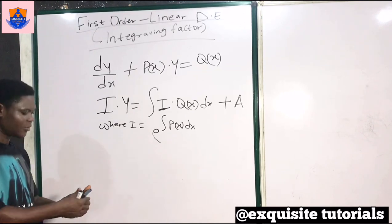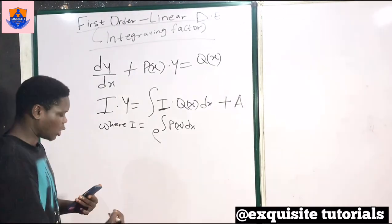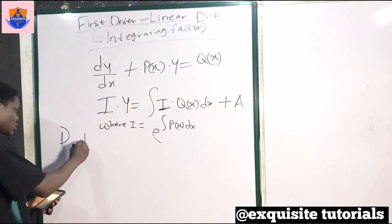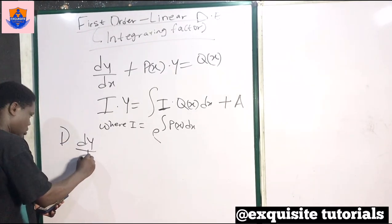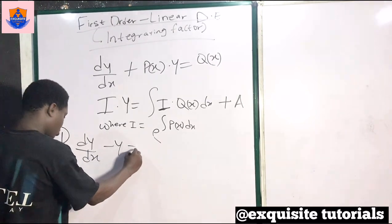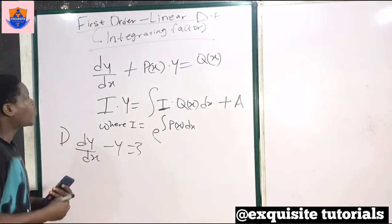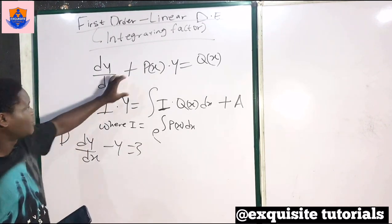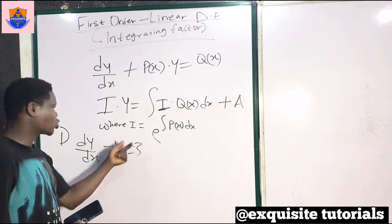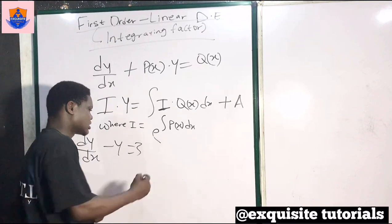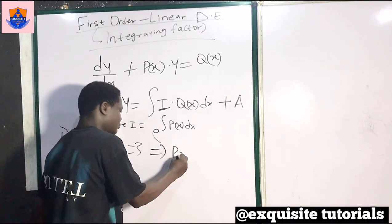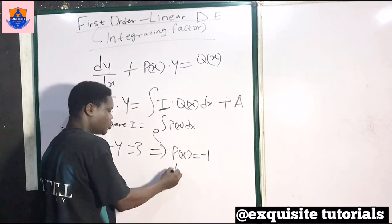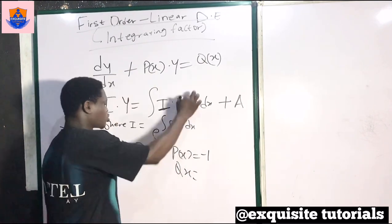Our first question is: dy over dx minus y equals 3. When you compare this equation with our general equation, dy over dx matches dy over dx, and the coefficient of y is minus 1. So it implies that p of x equals minus 1, and q of x equals 3.